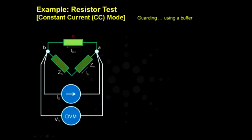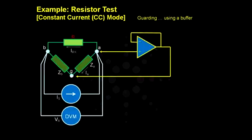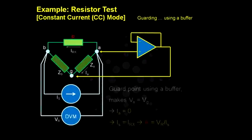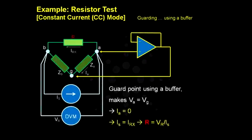To eliminate the leakage current I-A, a guard point is added at point G. This time, the guard point connects a buffer between point A and point G. This makes the potential at point A and G be equal. So no potential difference exists to drive current I-A.